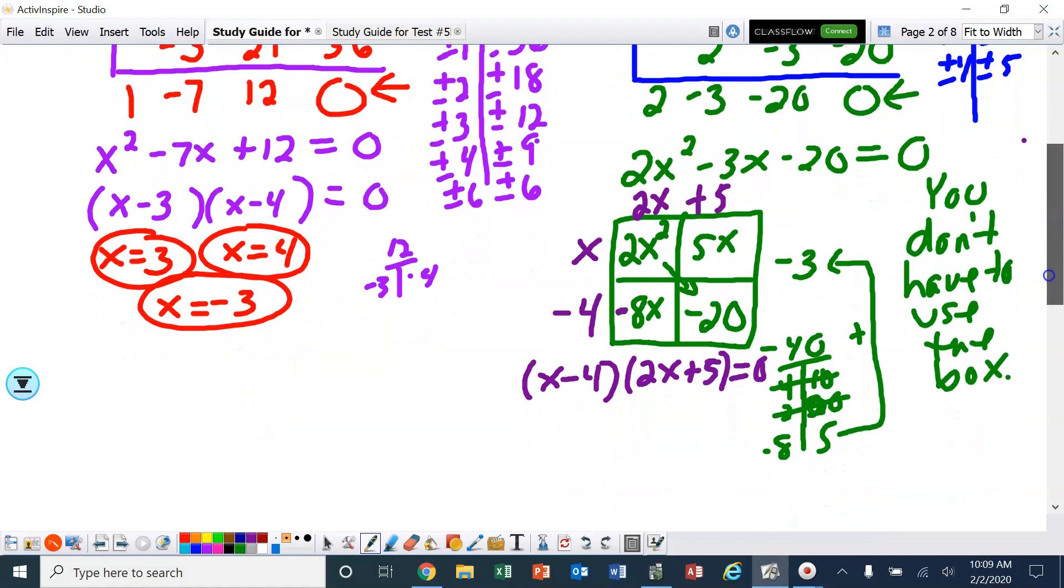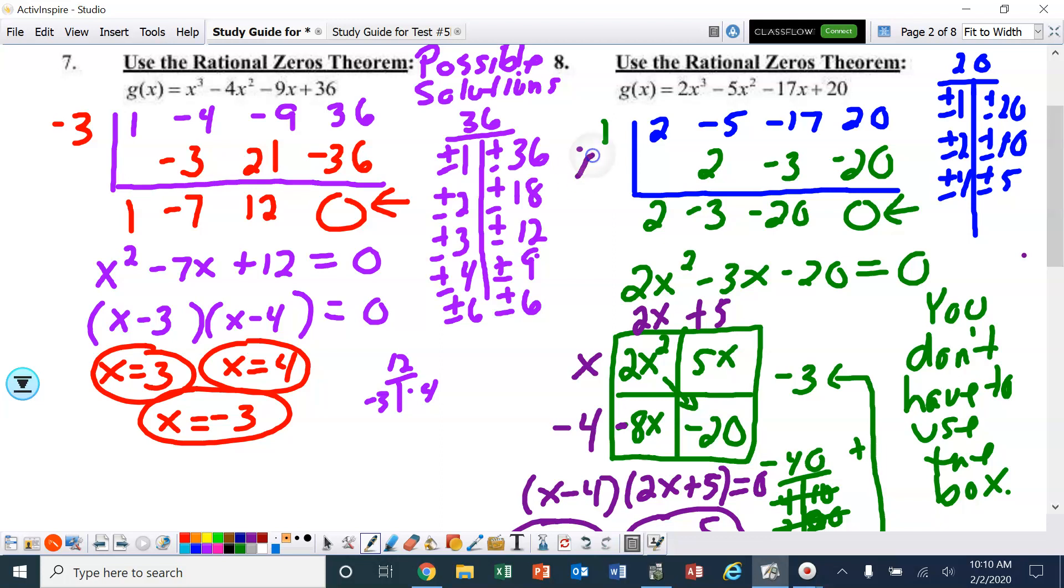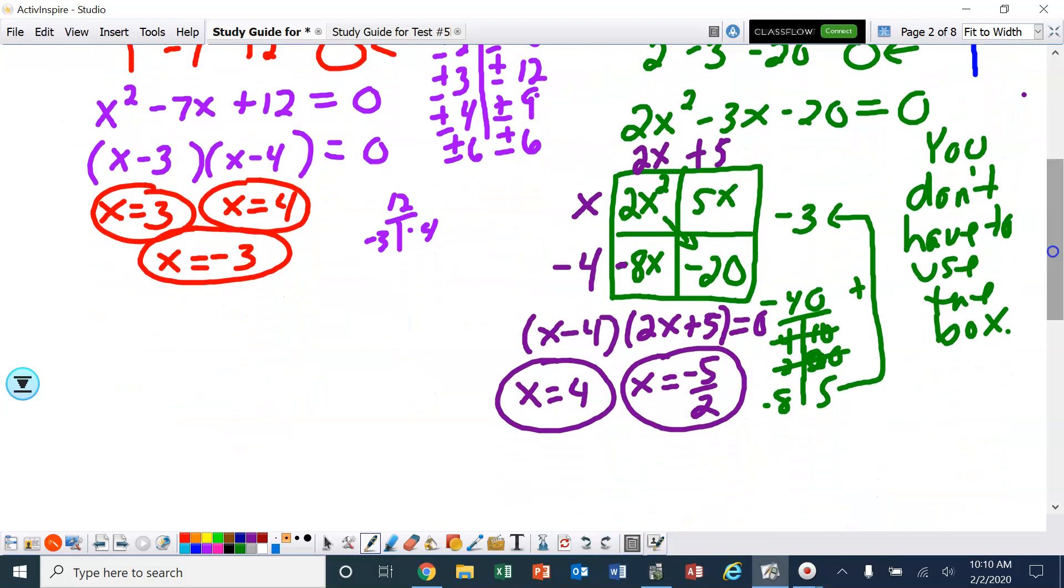One of the solutions, I already knew 4 was a solution from the calculator. And then this solution is -5/2. Don't forget the first solution that we started with is 1. So those are the three solutions to that polynomial.